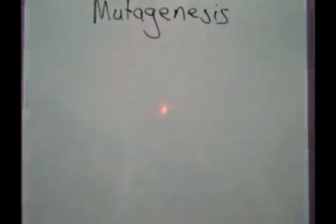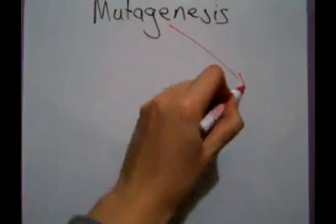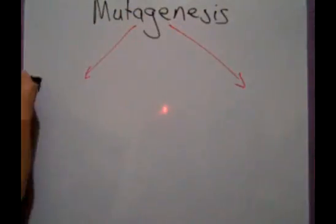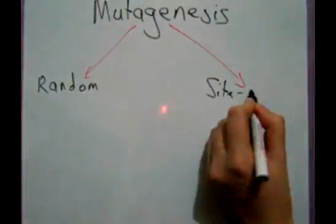Site-directed mutagenesis is a technique for introducing desired mutations into a genome in a controlled way, as opposed to random mutagenesis.